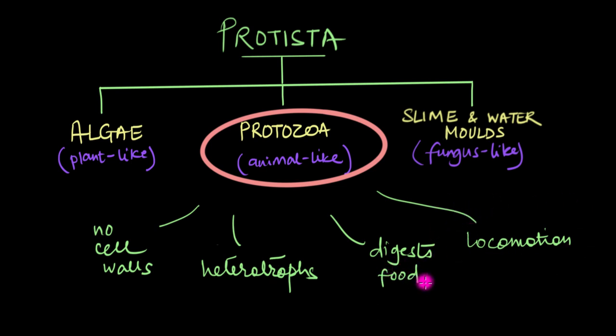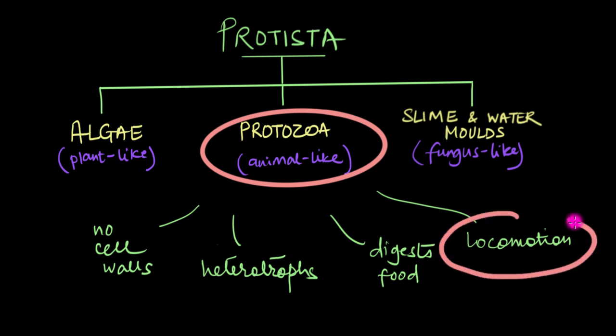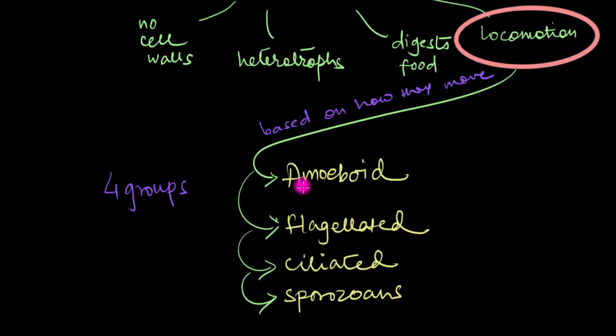While digestion is carried out with the help of something called food or digestive vacuoles, locomotion — that is the whole moving from one place to another thing — is carried out in a variety of different ways. Based on how they move around, protozoans have been broadly categorized into four groups.